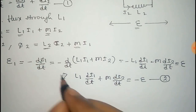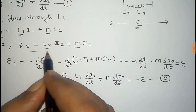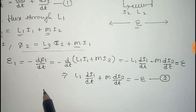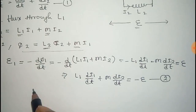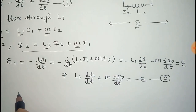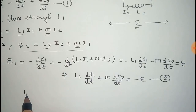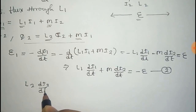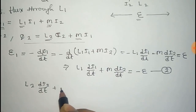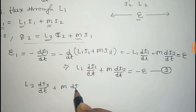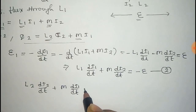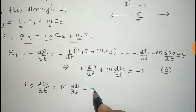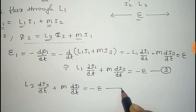Similarly, for phi2, we get the equation: L2·(di2/dt) + M·(di1/dt) = minus e. Take this as equation number three.